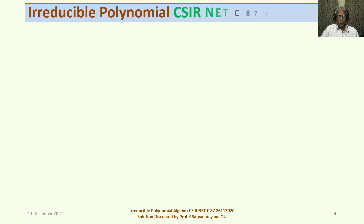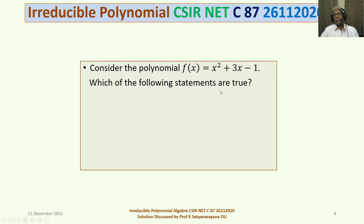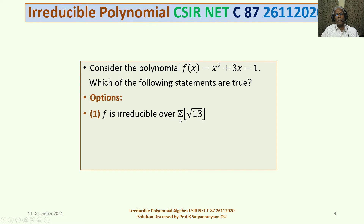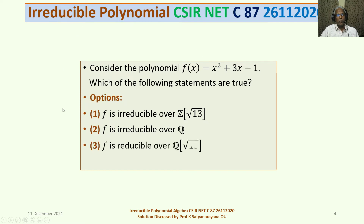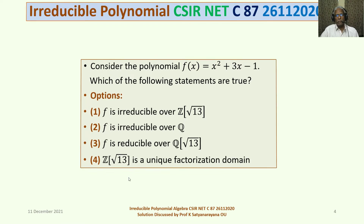The problem is: consider the polynomial f(x) = x² + 3x − 1. Which of the following statements are true? Option 1: f is irreducible over Z(√13). Option 2: f is irreducible over Q. Option 3: f is reducible over Q(√13). Option 4: Z(√13) is a unique factorization domain.